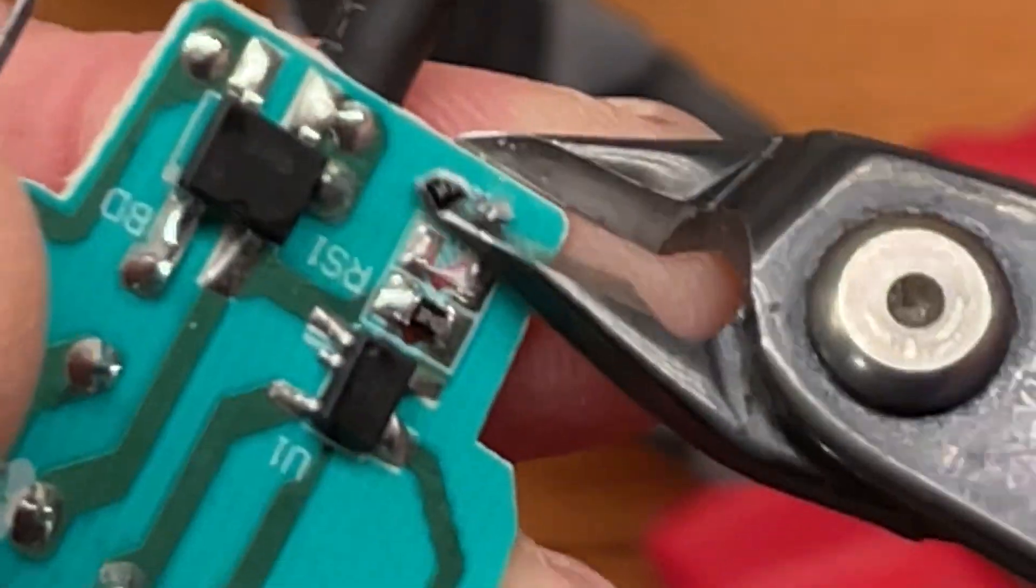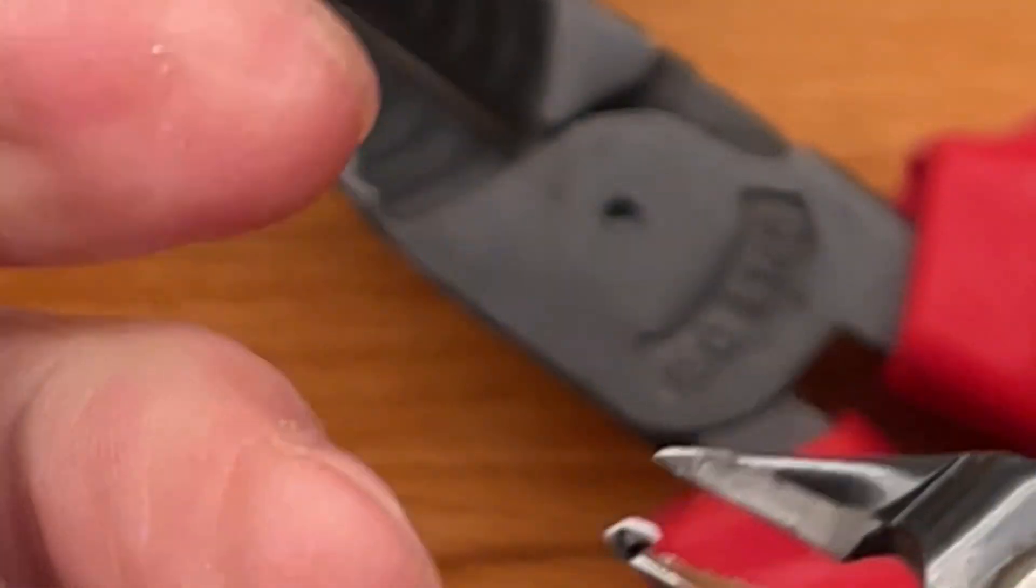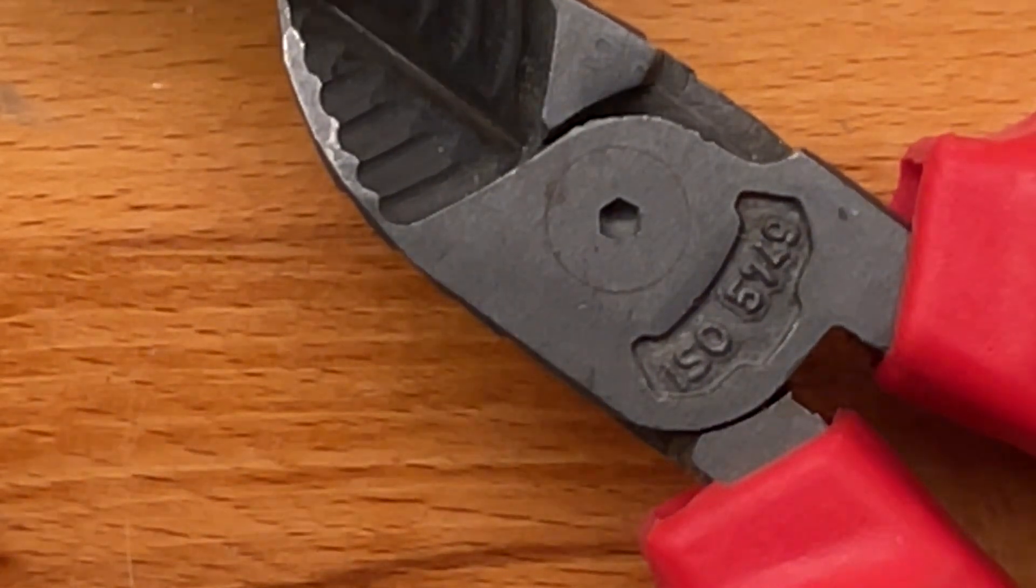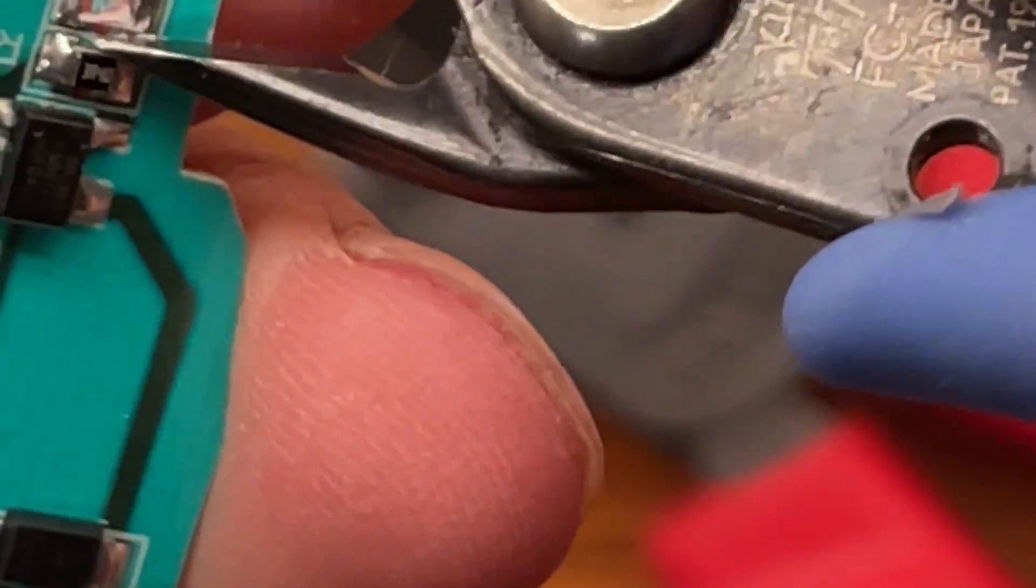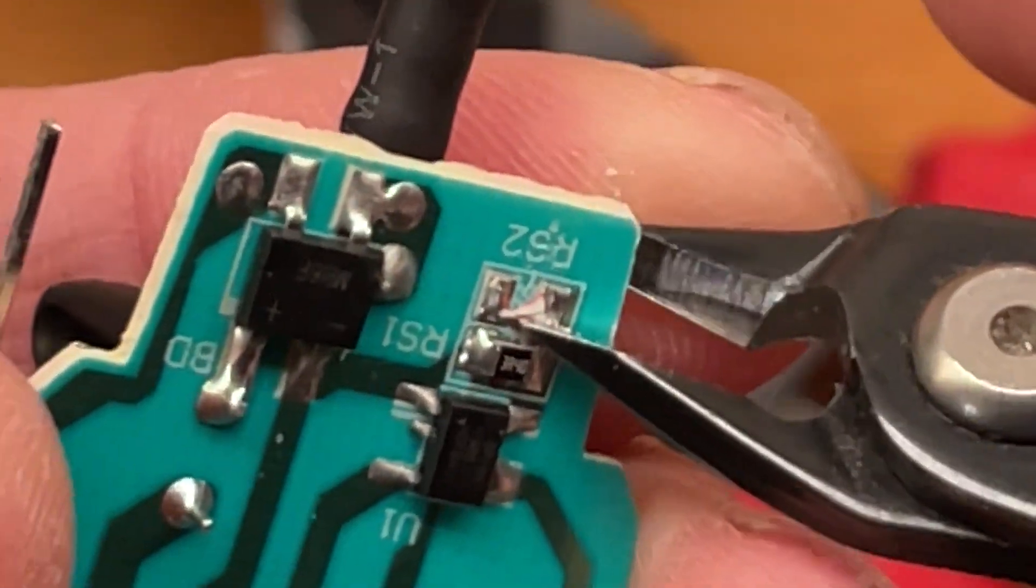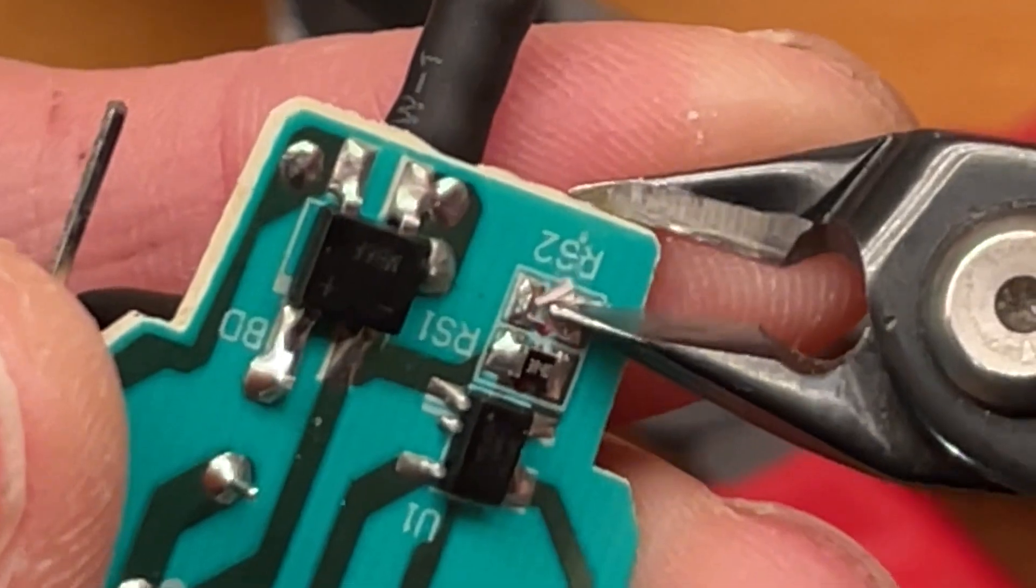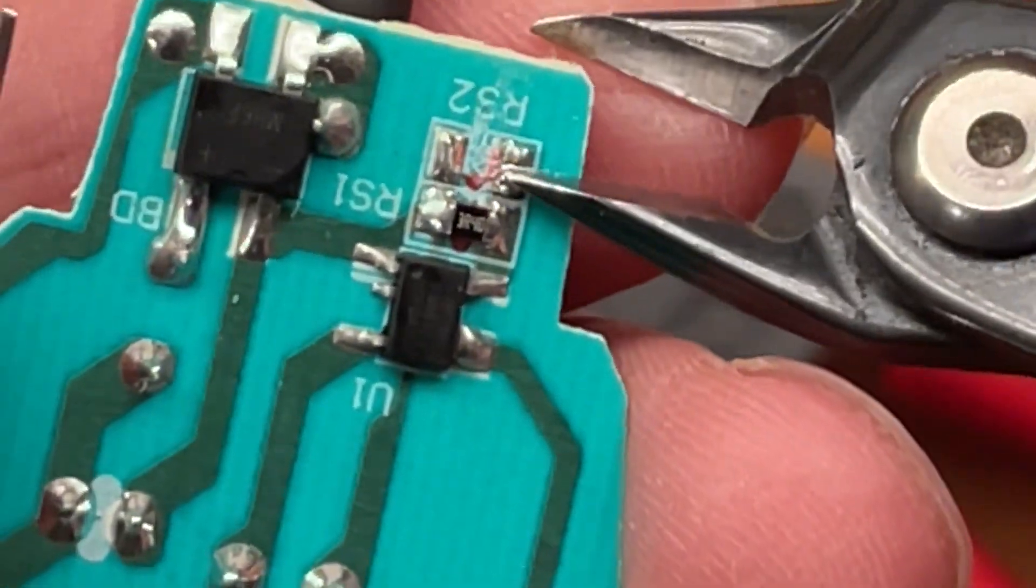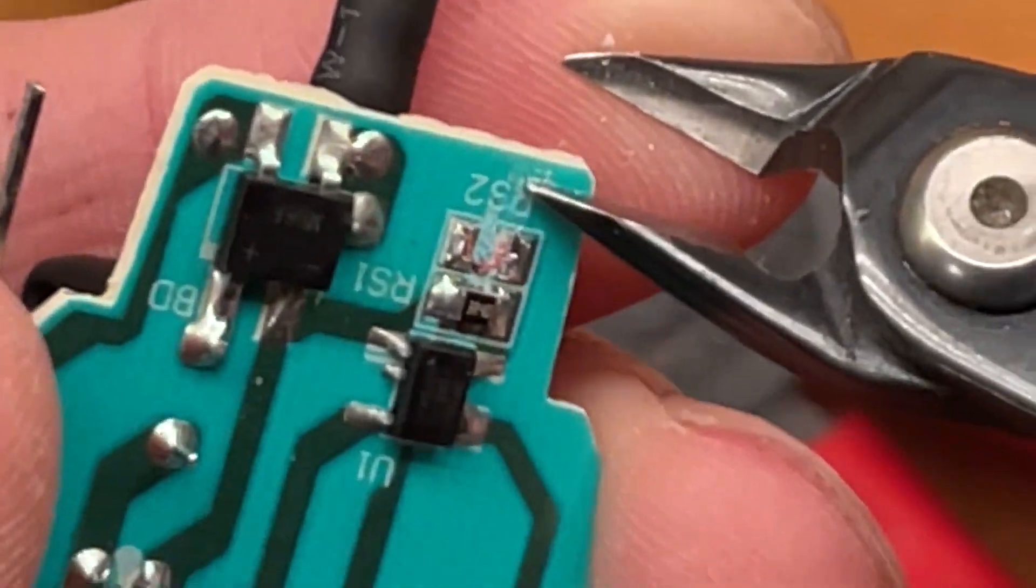This should reduce the wattage by half or thereabouts, right? So we're seeing 14.5, 14.7, should see about seven, which will mean this bulb will run insanely cooler. So it'll run way more than twice as cool and it'll live a long and prosperous life.